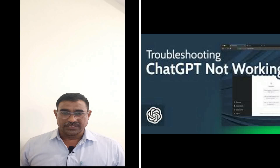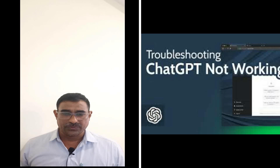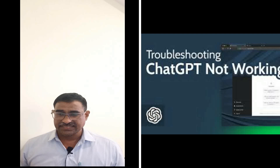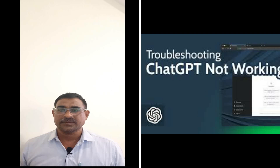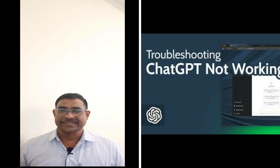The first thing to check is whether the problem is with OpenAI's servers. Sometimes ChatGPT goes down due to high demand or maintenance. To check the server status, open your browser and search for 'OpenAI status.' Head over to status.openai.com, where you will find real-time information about any outage issues with ChatGPT. If there is an outage, you will need to wait until OpenAI fixes it. If everything looks green, then the issue may be on your side.